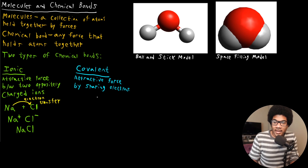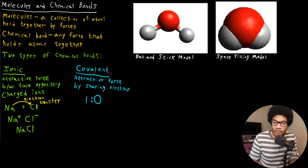Let's use water as an example. If we have the oxygen in the center, what oxygen is going to do is share one of its electrons with hydrogen — I'll use dots to denote electrons. This is something we do a lot in chemistry. We can show that the oxygen shares an electron with hydrogen on one side, and also shares an electron with hydrogen on the other side, to give you H2O.